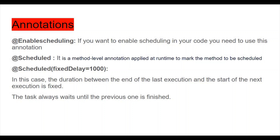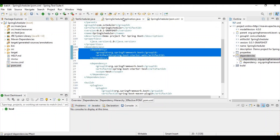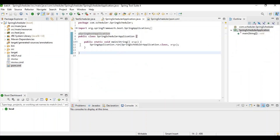`@EnableScheduling`: if you want to enable scheduling in your code, you need this annotation. `@Scheduled` is a method-level annotation applied at runtime to mark the method to be scheduled. For `@Scheduled(fixedDelay=1000)`, the duration between the end of the last execution and the start of the next execution is fixed — the task always waits until the previous one is finished.